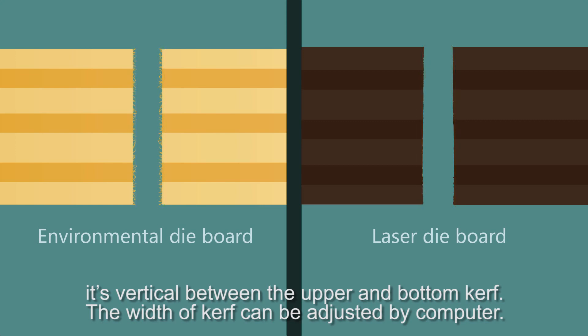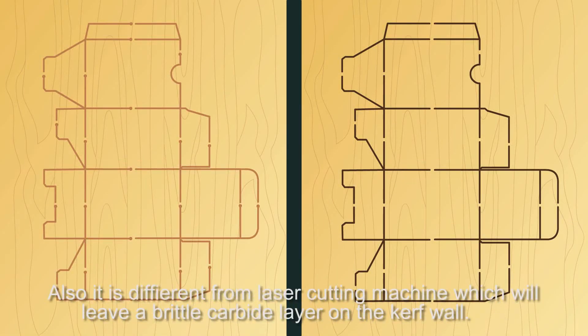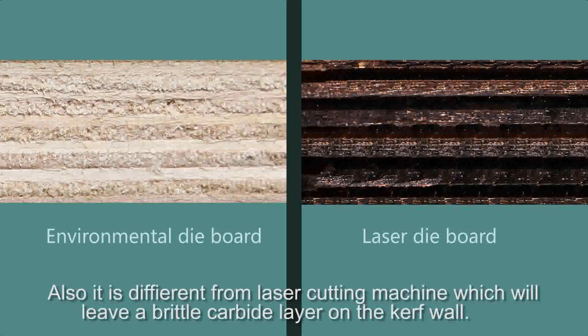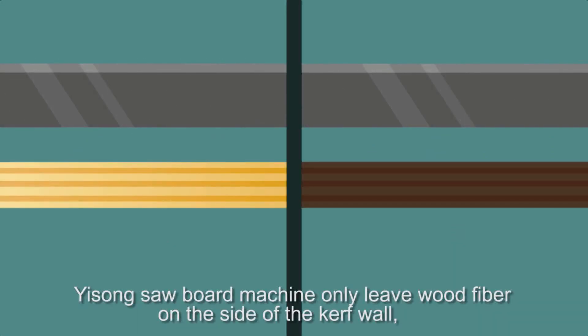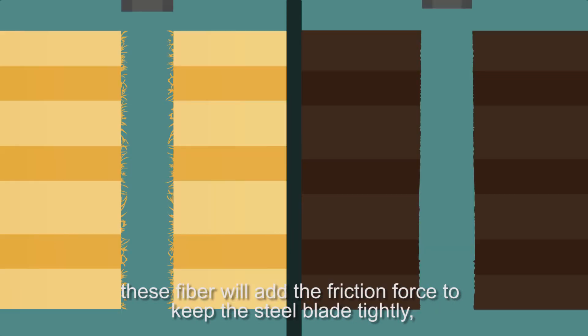Yizong Sawing Board Machine can realize the same width of curve. It is vertical between upper and bottom curve. The width of curve can be adjusted. It is very easy to fix the blade to curve quickly.